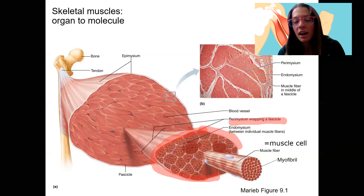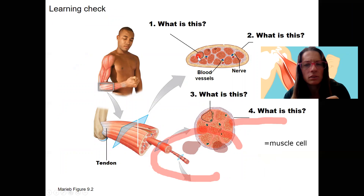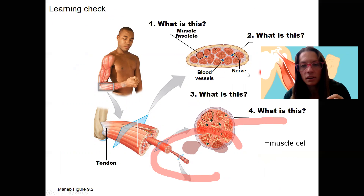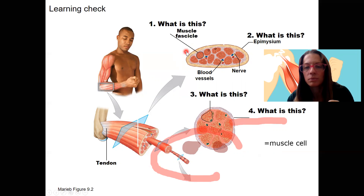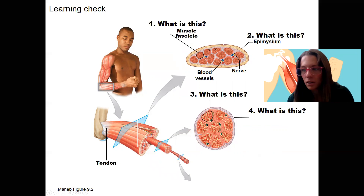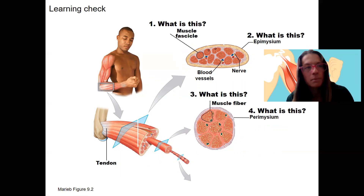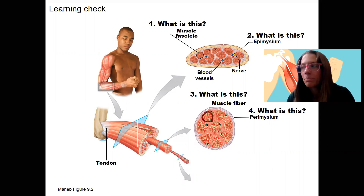Let's do a quick learning check, and then we'll zoom in to the details of a muscle cell in the next video. First, what is this thing right here? It's a muscle fascicle. Here's the entire organ. What is this outer layer surrounding all these fascicles? The epimysium surrounds the entire muscle organ. What is this right here? That's a muscle fiber — if you see 'muscle cell,' totally fine. And what is this surrounding this bundle of cells? That's the perimysium. The endomysium would be this right here.